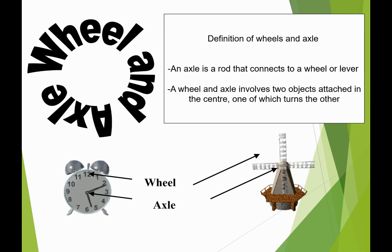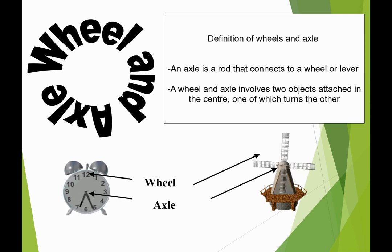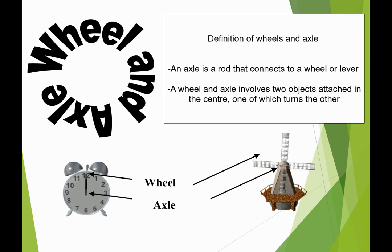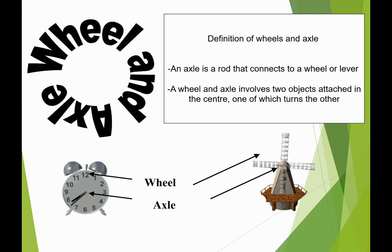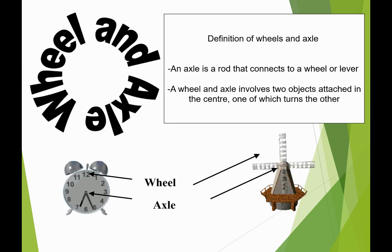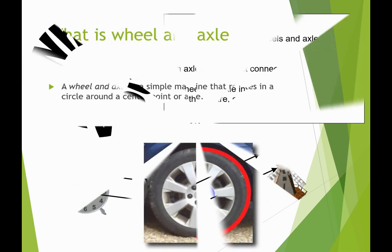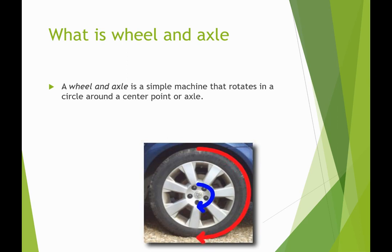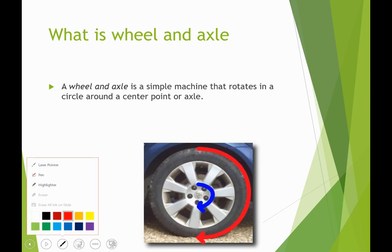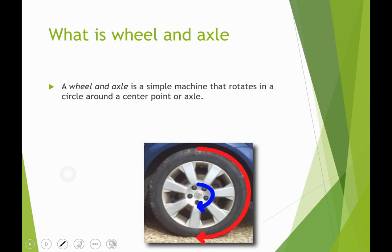If you turn the axle, the wheel will turn, and if you turn the wheel, the axle will turn. Here are two examples of a wheel and axle — the clock is one of them. A wheel and axle is a simple machine that rotates in a circle around a center, which we call the axle.